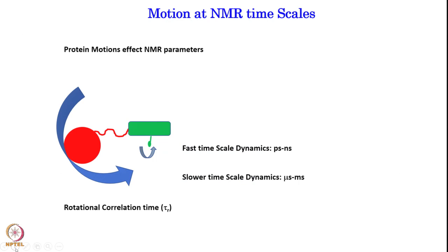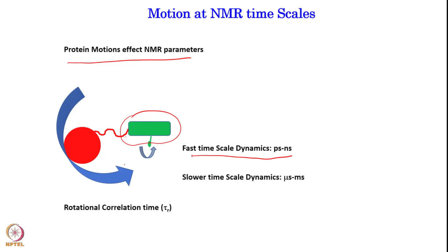Let us talk a bit more about the motion, which will help us in designing the experiment. Protein motion affects NMR parameters. Various kinds of motion exist — local motion is a fast time-scale motion at picosecond to nanosecond time scale, where each bond is making some motion, either rotation or conformational excursion. If you look at the whole molecule — say a protein with a beta domain and a helical domain connected by a loop — the whole protein is tumbling, which has a rotational correlation time. That is a slow time-scale motion, in the microsecond to millisecond range. So to probe local motion as well as collective motion, we need different kinds of experiments.